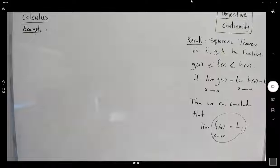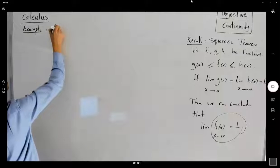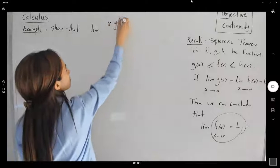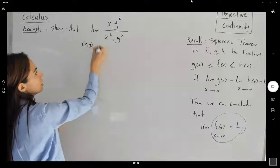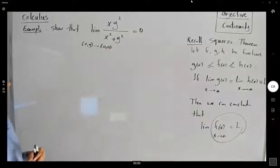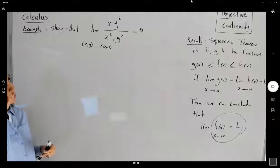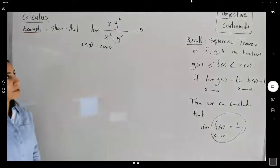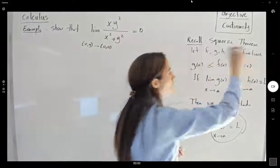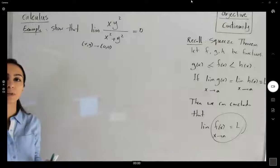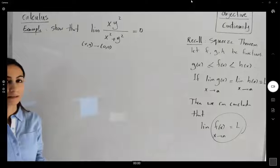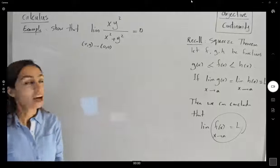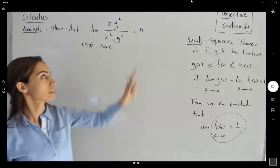Example: show that the limit of xy² divided by x² plus y² as (x, y) approaches (0, 0) is equal to zero. We have something on the numerator and something on the denominator. I'm going to find a lower and upper function, like g and h, then find the limits of those simpler functions and show they have the same limit, and conclude that the limit of this complex function equals zero.